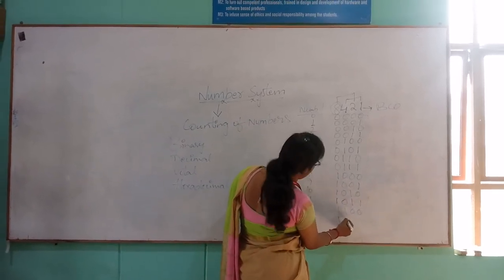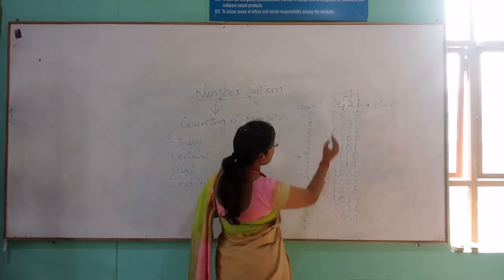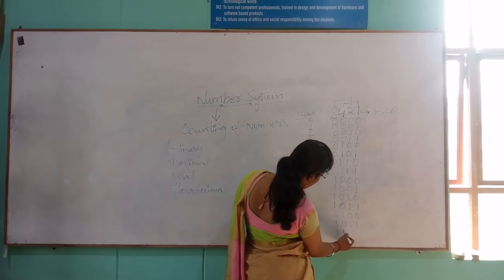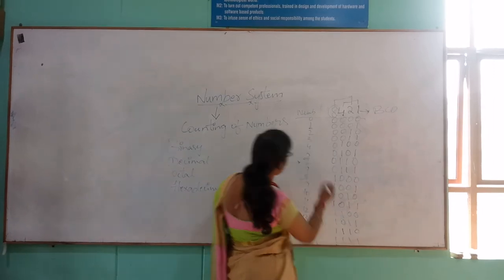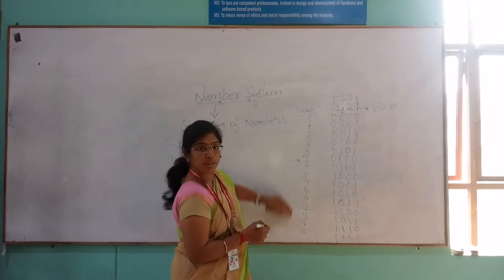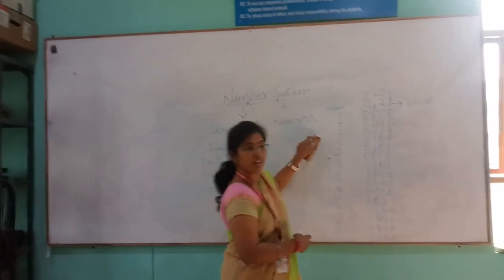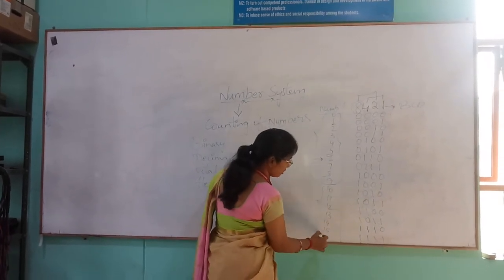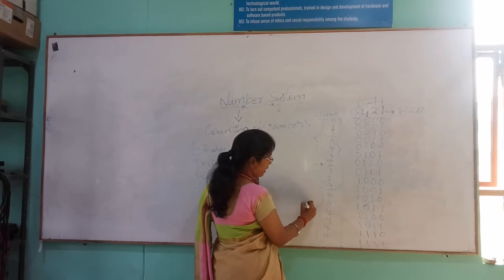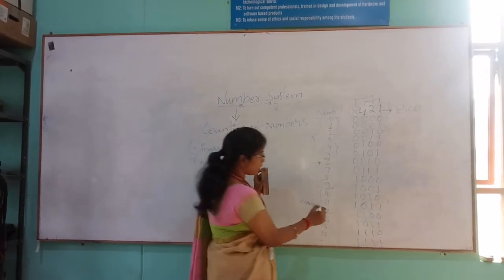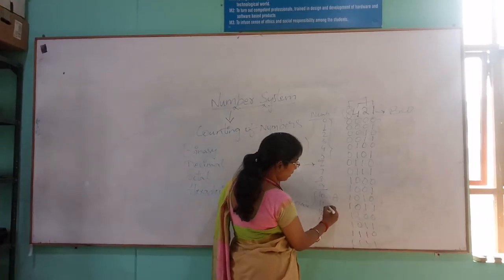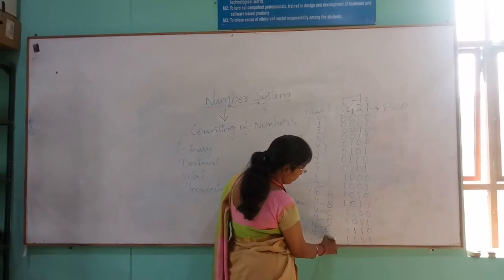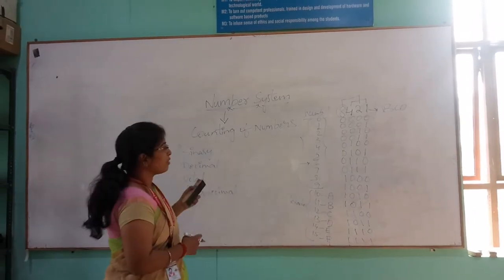For 13: 1, 1, 0, 1. For 14: 8 plus 4 plus 2 equals 14, so 1, 1, 1, 0. For 15: 1, 1, 1, 1 — all will be 1. From 0 to 9 we call it the normal number system. But from 10 to 15 these are called hexadecimal. In hexadecimal, we define each number with an alphabetic code: 10 will be A, 11 will be B, 12 will be C, 13 will be D, 14 will be E, and 15 will be F.